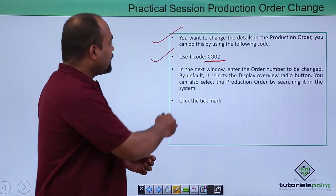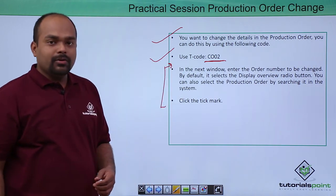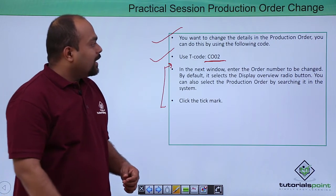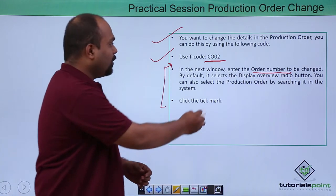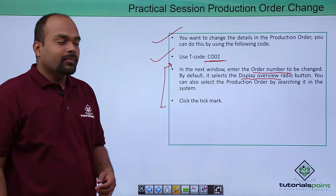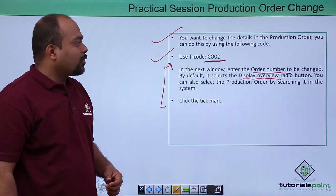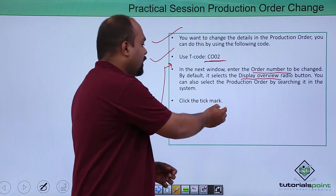In that one, the practical here is written what you require. Enter the order number to be changed. By default it selects the display overview radio button. Then you can select the production order by searching, then afterwards you can tick mark on it.